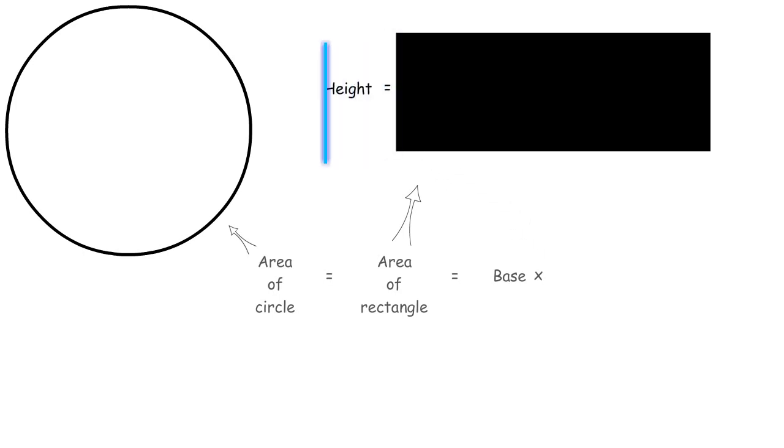So the area of the circle is equal to the area of the rectangle, which is equal to base times height. The height of the rectangle, as you can see, is the same as the radius. So height is equal to radius.